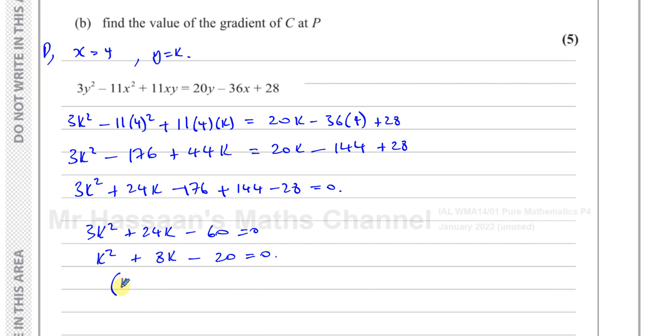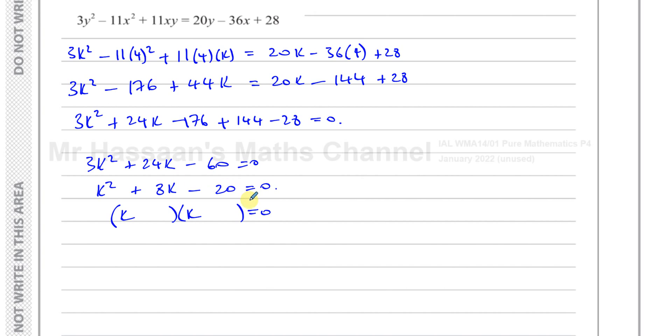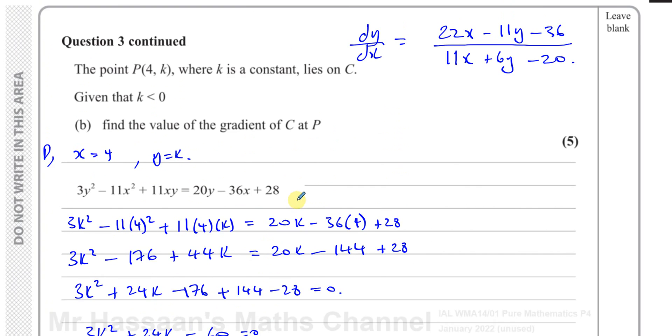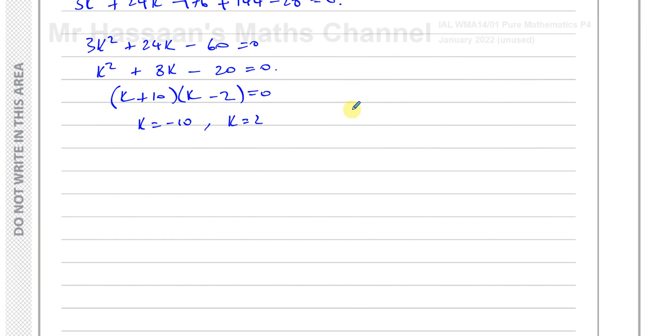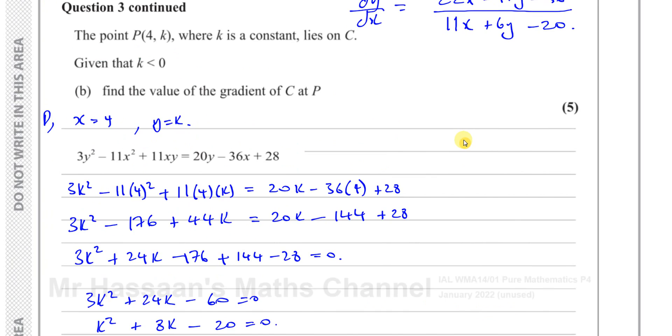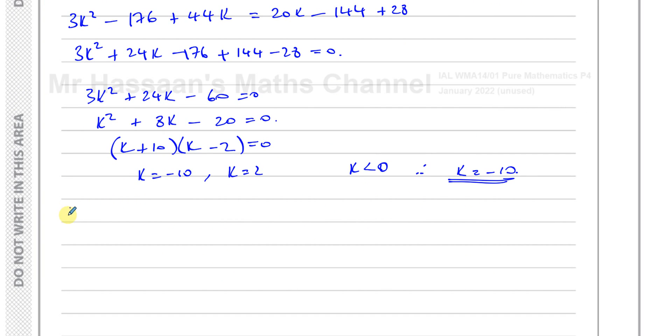Now we can factorize to find the values of k when this is true. So we've got two numbers multiplied to give you -20 and add to give you 8, which is 10 and 2. Must be plus 10 and -2. So k equals -10 and k equals 2. Now they've told us in the question that k is less than 0. Therefore, k is equal to -10. And so therefore, the point P has coordinates (4, -10).